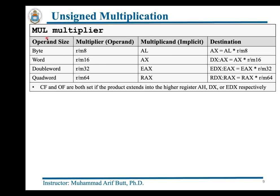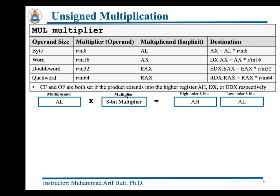This slide summarizes the behavior or operation of the x86 MUL instruction, which can perform 8-bit, 16-bit, 32-bit, or 64-bit multiplication on unsigned integers. MUL is a single-operand instruction, and this only operand is assumed to be the multiplier. The multiplier must be a register or a memory location — an immediate operand is not allowed. The action of this instruction depends on the size of this operand.